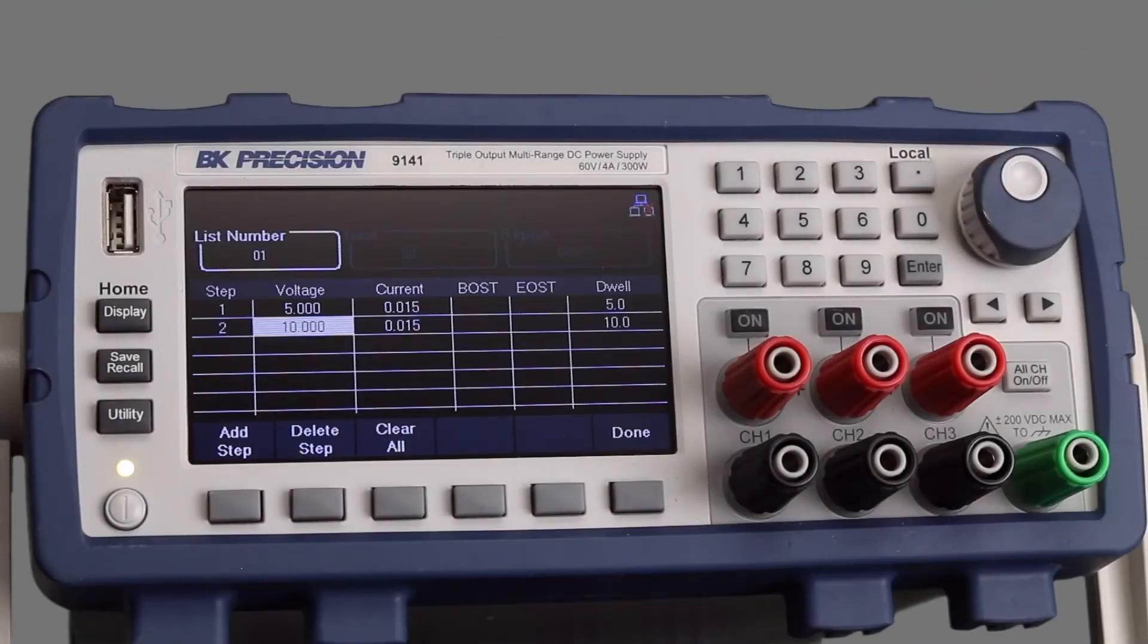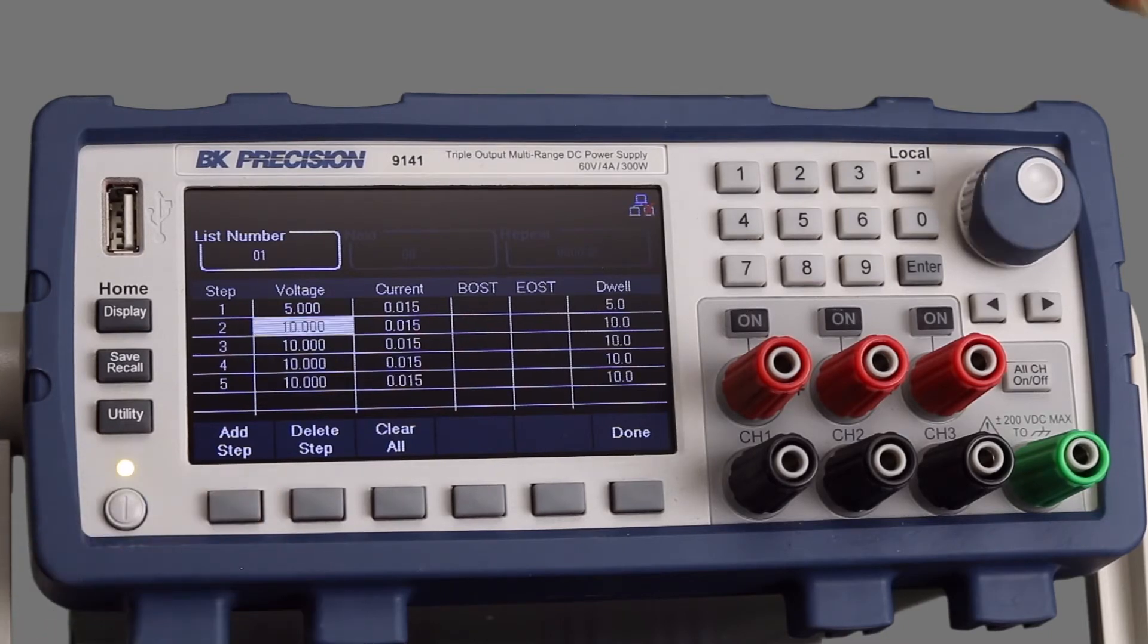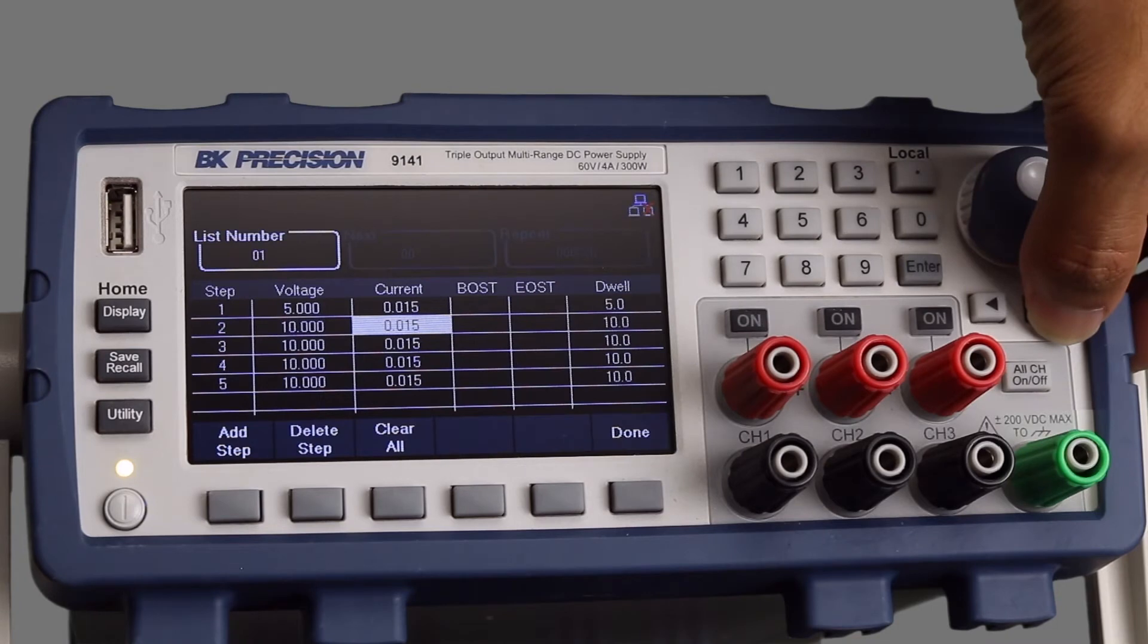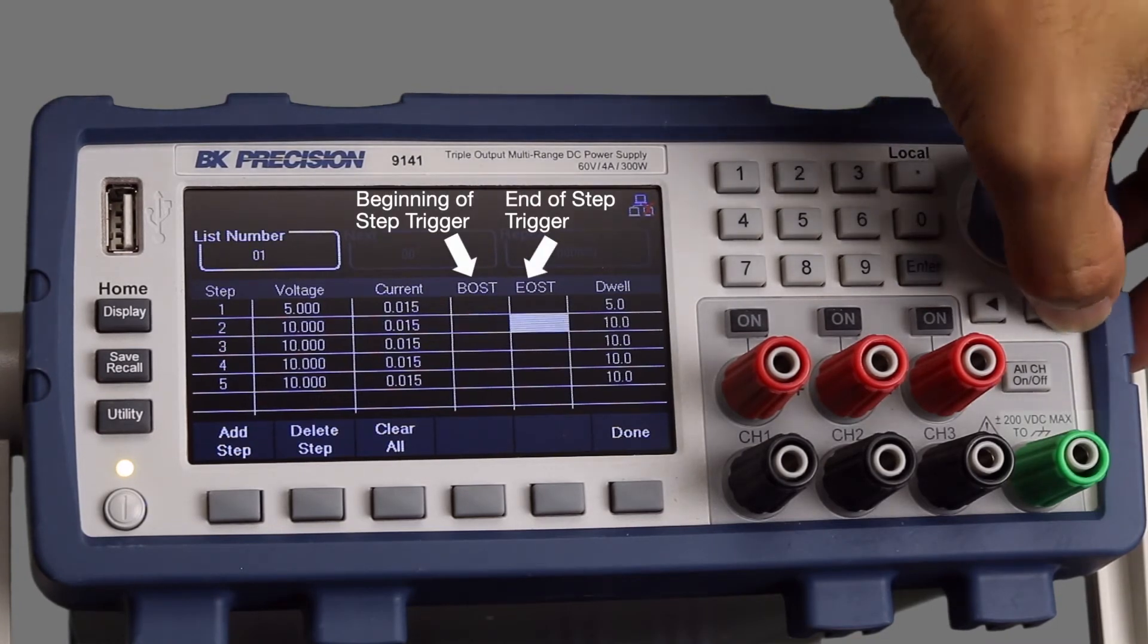In this example, we are creating a short list with just a few steps. From the list setup menu, a trigger output signal can be added to the beginning of step, end of step, or both.